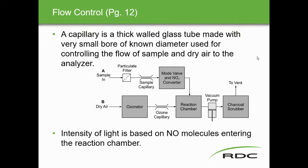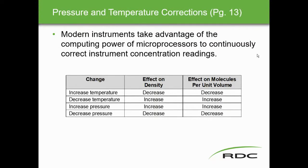The intensity of light is based on the number of NO molecules entering the reaction chamber. Modern instruments use microprocessors to continuously correct for temperature and pressure. As temperature increases, gas density decreases and the number of molecules decreases, which affects measurement — this is why temperature and pressure data must be fed to the microprocessor for accurate results.